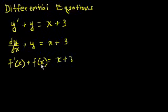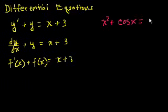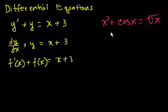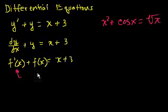What's interesting here, and how this is a departure from regular equations — let me write down a regular equation just to remind you. A regular equation with one variable might look like x squared plus cosine of x equals the square root of x. Here, the solution is a number, or sometimes a set of numbers. For a differential equation, the solution is a function. Our goal is to figure out what function of x explicitly satisfies the relationship or equation.